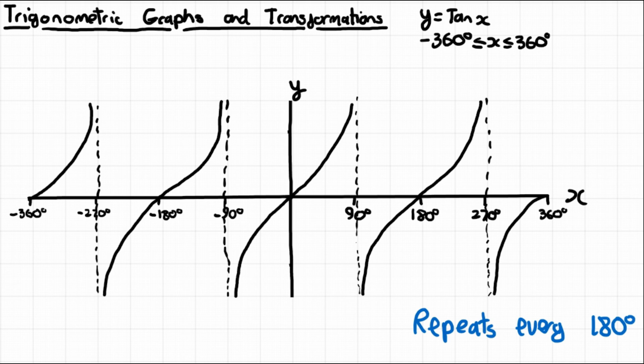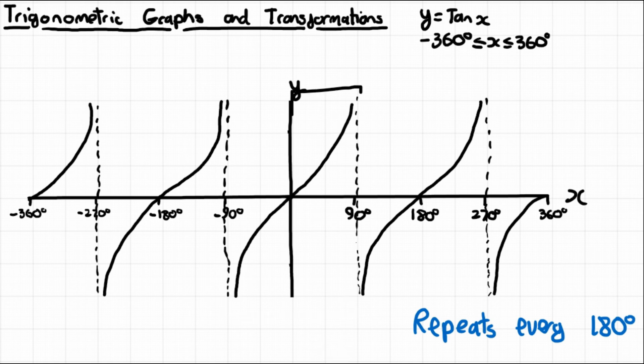A common mistake with drawing these graphs is getting the width wrong. Remember: each segment of the tan graph is 180 degrees wide, and the smaller half-segment is 90 degrees.